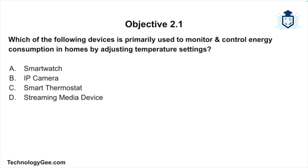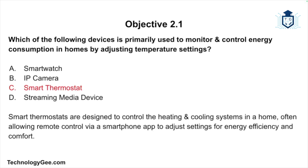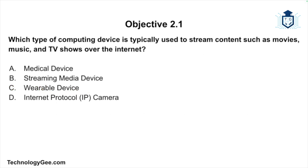Now let's get into the check on learning. Which of the following devices is primarily used to monitor and control energy consumption in homes by adjusting temperature settings — a smartwatch, an IP camera, a smart thermostat, or a streaming media device? The answer is a smart thermostat. They are designed to control heating and cooling systems in the home, often allowing remote control via a smartphone application to adjust settings for energy efficiency and comfort.